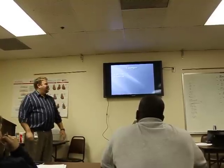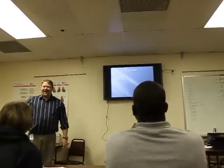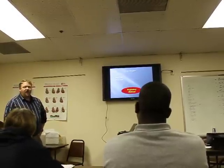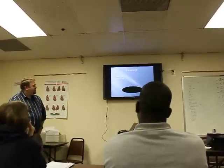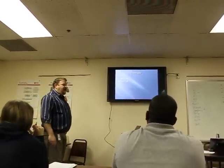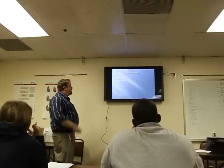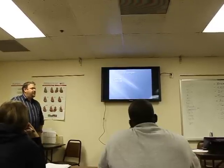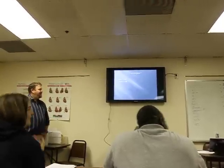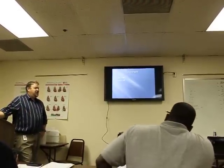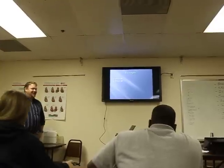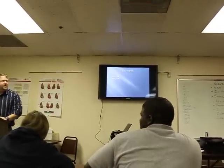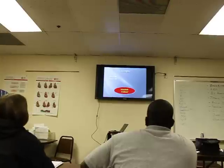Respiratory alkalosis — tell me why. Because it's basic on both ends: it's above 7.45 and the PCO2 is below 35. You, sir, are a rock star. Next: pH of 7.28, PCO2 of 38. Metabolic acidosis. Why? Because the PCO2 is normal and the pH is below 7.35. Well done.